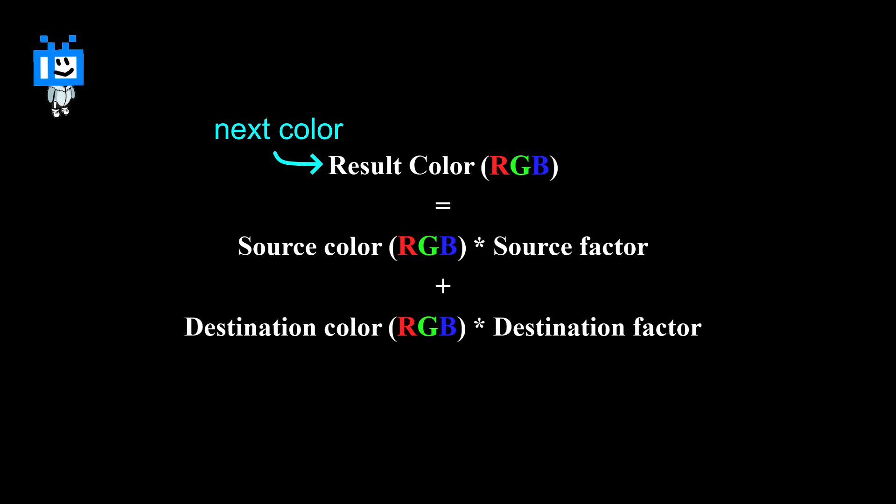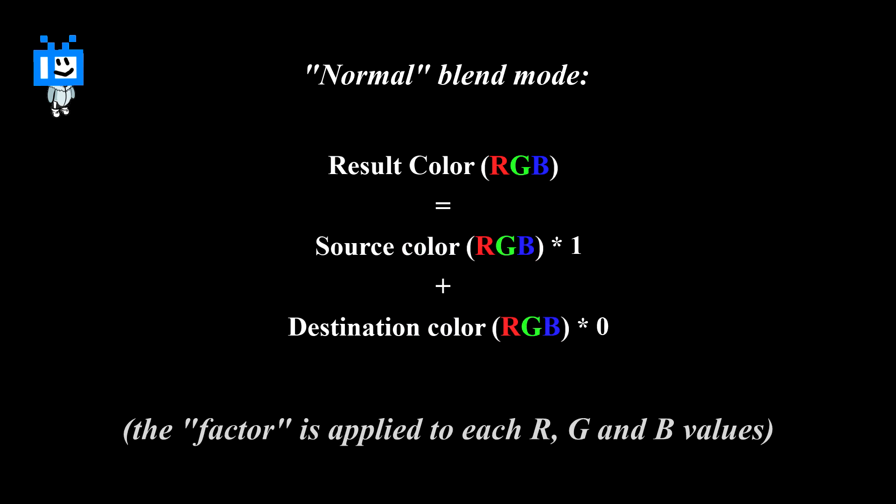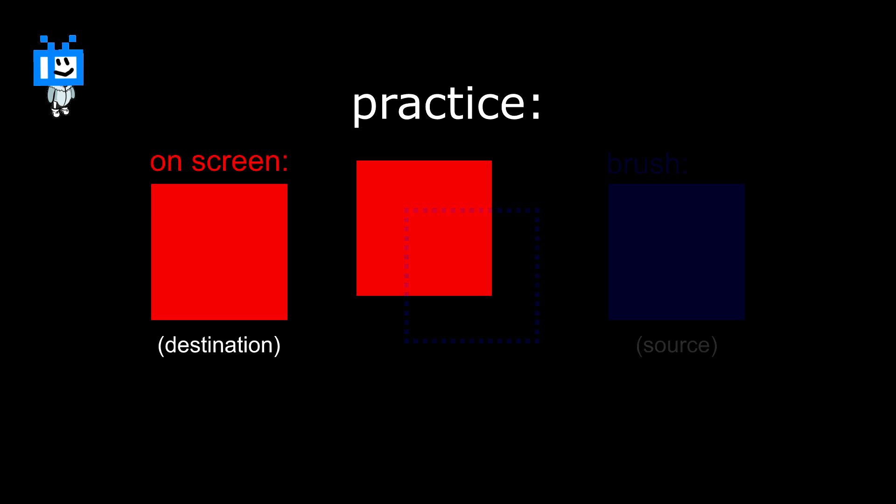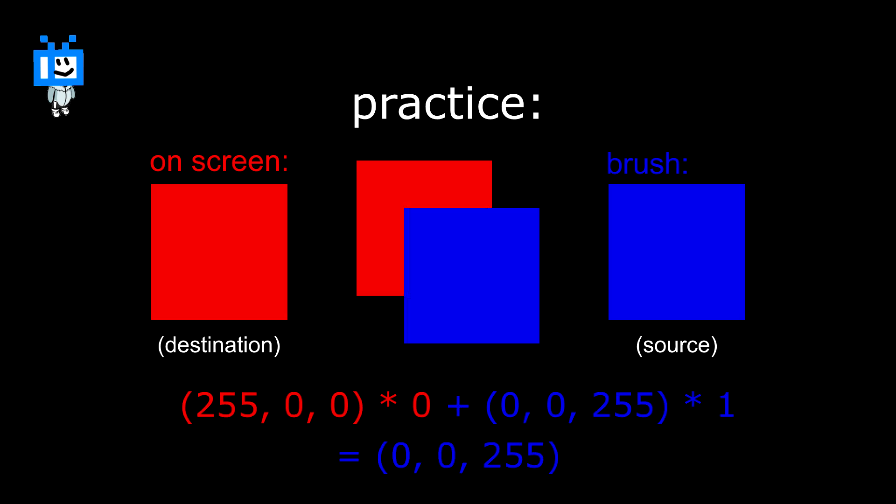So what that does is it calculates the next color using the color on the screen, the destination color, and the color on your brush, the source color. The part that we control are these factors. The normal blend mode is something like this: multiply the destination by zero and multiply the source by one. Here's how it works in practice. This red square is already on the screen, and you want to have this blue square on top. You multiply the destination color by zero, which means it's black, and then you add the source color.